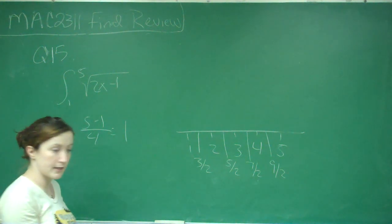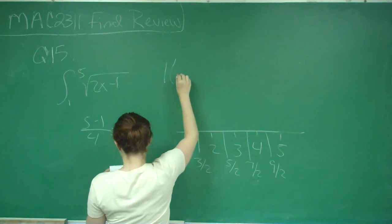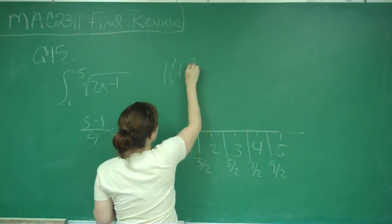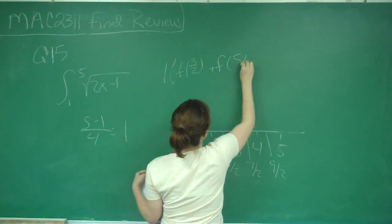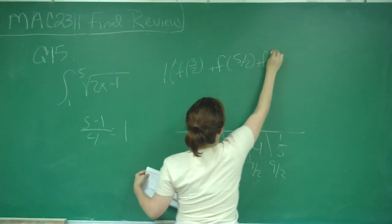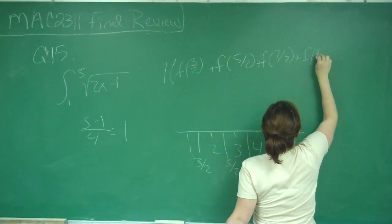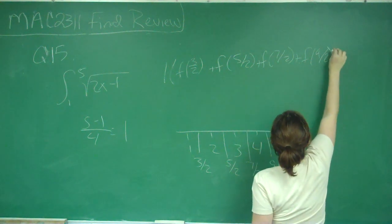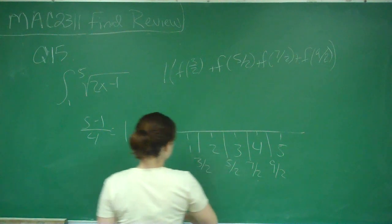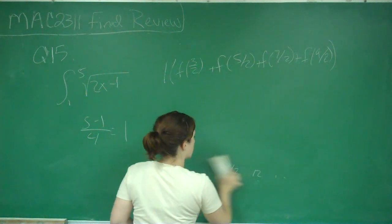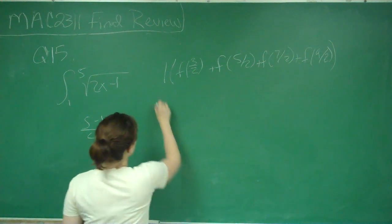So I'm going to do my rectangles. My width is 1, and each of my rectangles is going to be f of 3 halves plus f of 5 halves plus f of 7 halves plus f of 9 halves. And with all of that, I can just plug these values into my function, which is the square root of 2x minus 1.